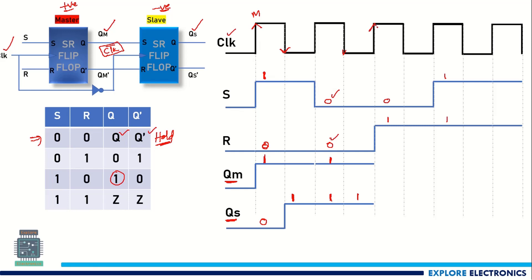When the next positive edge of the clock comes, S=0 and R=1. For S=0, R=1 inputs, the output Q is 0, meaning it should come back to 0. So QM comes back to 0 from 1, and QS changes to 0 at the negative edge of the clock.